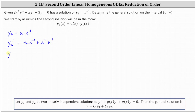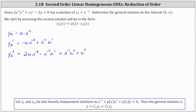Now we can find y2 double prime, which is going to require the product rule twice. The derivative of negative u·x to the power of negative two is equal to negative u times negative two x to the power of negative three, or two u·x to the power of negative three. Then plus x to the power of negative two times the derivative of negative u with respect to x, which is negative u prime, so this becomes minus u prime. Then plus the derivative of x to the power of negative one times u prime, which is x to the power of negative one times u double prime, plus u prime times the derivative of x to the power of negative one, which is negative x to the power of negative two, so this becomes minus x to the power of negative two.